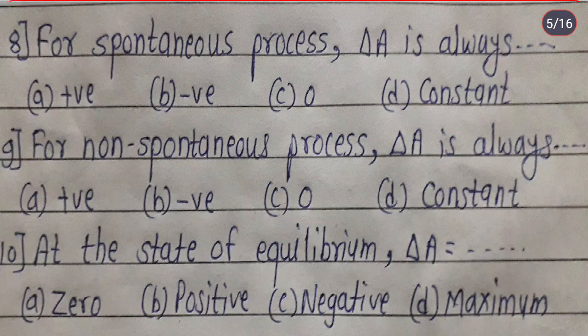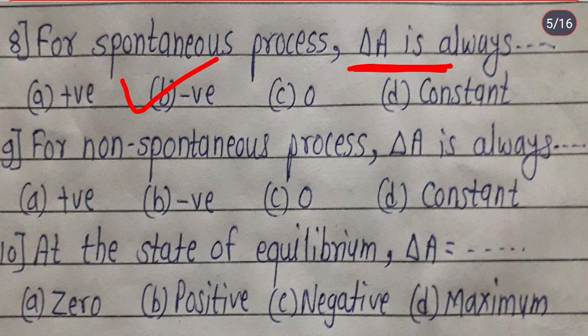For a spontaneous process, ΔA is always negative. For a non-spontaneous process — also known as a reversible process — ΔA is always positive. At the state of equilibrium, ΔG is always zero, or it is also known as minimum.